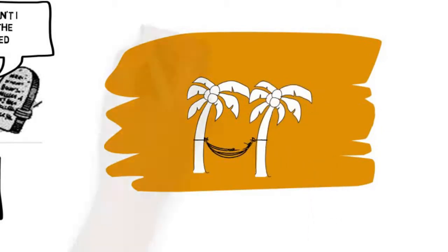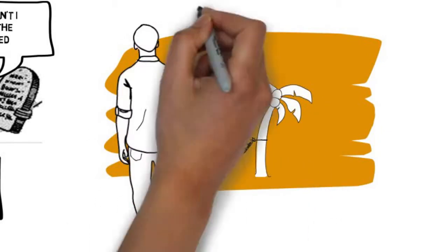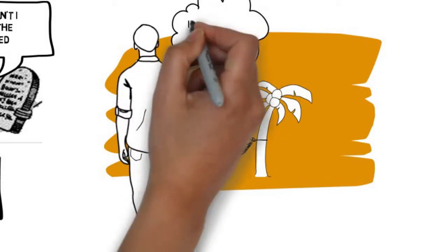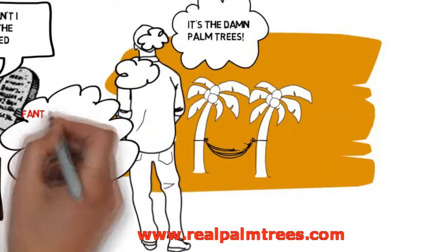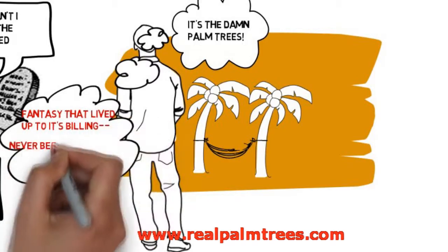One, making love to Rita was a fantasy that lived up to its billing. Two, he did a bang-up job in the hammock, but had never been able to even get into a hammock before. It had to be those damn palm trees.